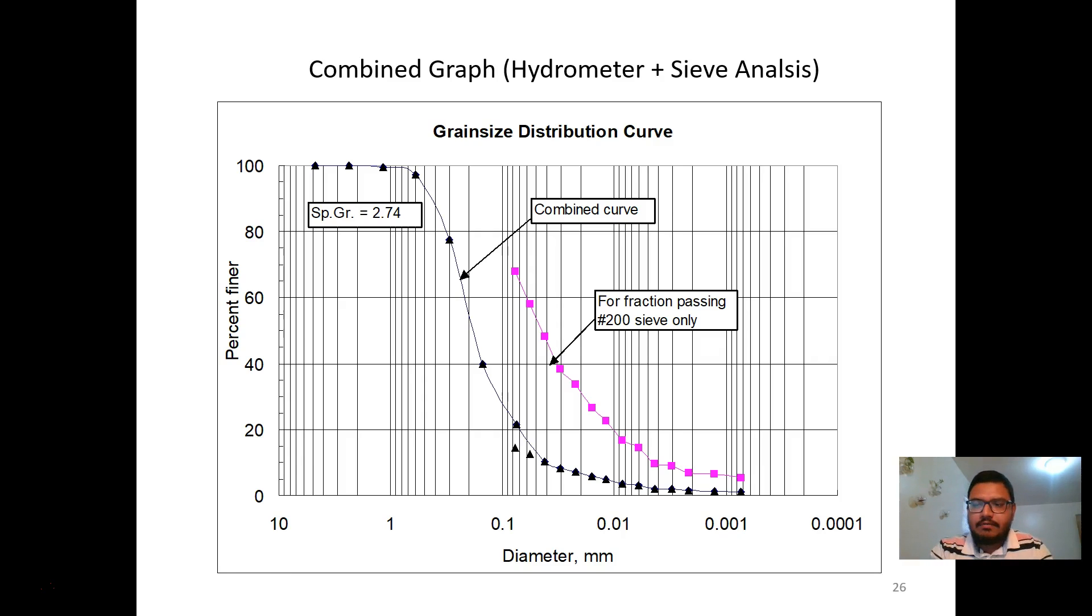If we have the particle diameters along with the percent finer, we can plot the grain size distribution curve on semi-log graph paper. You can use Excel or any other graph plotting software for this graph. The curves from hydrometer and sieve analysis can be combined to plot the full grain size distribution curve for that soil sample.